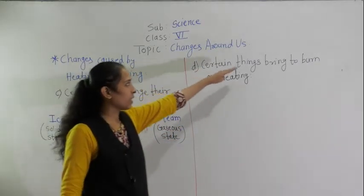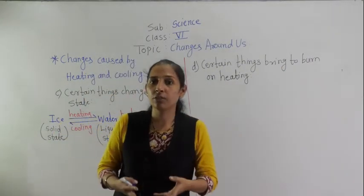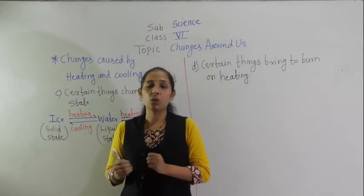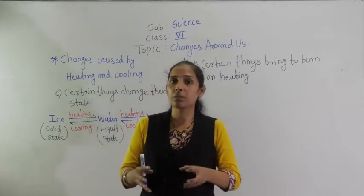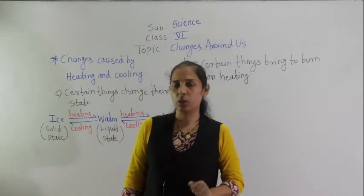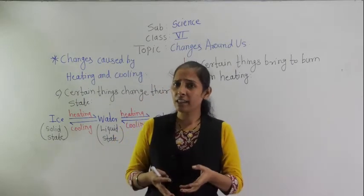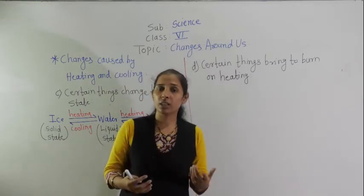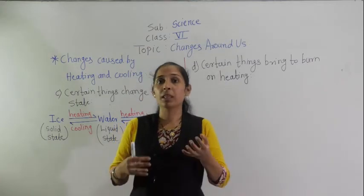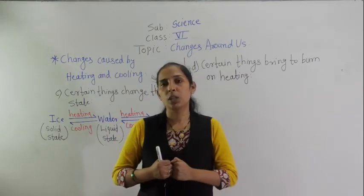Now the next point: certain things burn on heating. There are certain combustible substances — substances which catch fire. Examples of combustible substances include paper, candle, kerosene, wood, and coal. Whenever we heat these substances, they start to burn, and after burning they convert into ash.